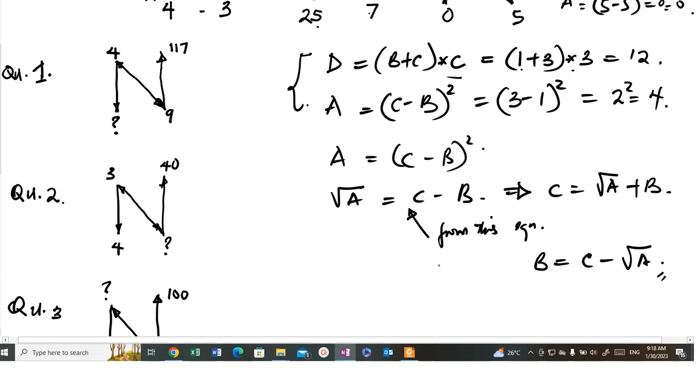So, we can now use it to solve these equations. For equation 1, you have 4, 9, we are looking for this. So, this is your A. The formula for A is C minus B all squared, which is 9 minus 4 all squared. This is 5 squared, which is 25. So, that means the answer for this is equal to 25.